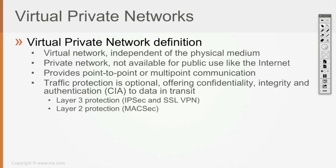If we want to offer traffic protection — which is going to mean encryption, hashing, and authentication — then we have two options. It's going to be either a layer 3 type of protection, with two sub-options: we can make use of an IPsec tunnel, which stands for IP security, or an SSL VPN tunnel.